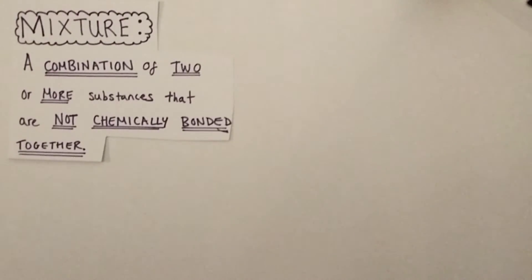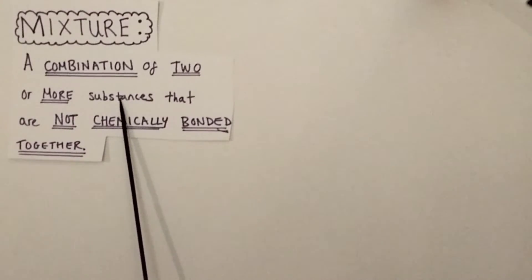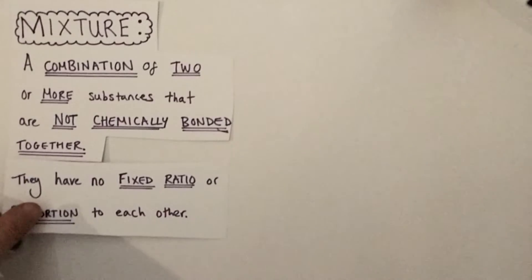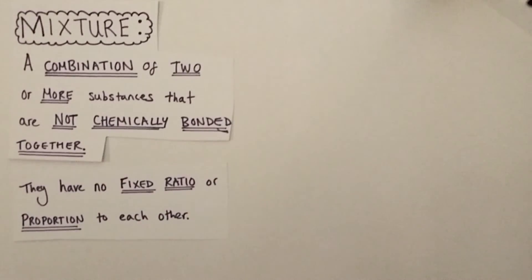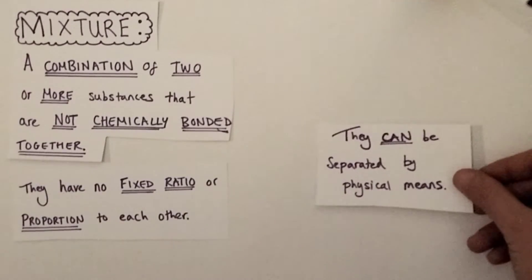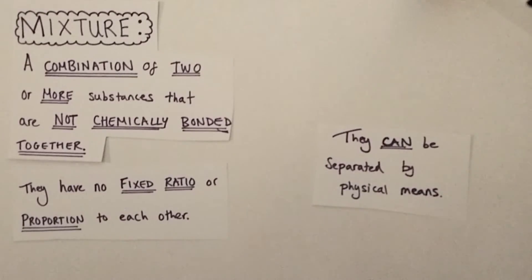The definition for a mixture is a little bit different. It is a combination of two or more substances — that could be elements, compounds, or both — that are not chemically bonded together. They have no fixed ratio or proportion to each other. So unlike in compounds where there is a set ratio of atoms of different elements making up the formula, mixtures have no fixed ratio and are literally a random assortment of elements, compounds, or both. And finally, they can be separated through physical means using separation techniques.